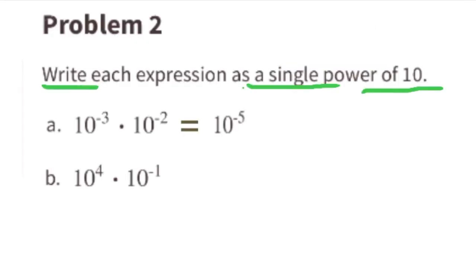Part B: 10 to the power of 4 times 10 to the power of negative 1. Add their exponents: 4 plus negative 1, or 4 minus 1, equals 3. So 10 to the power of 4 times 10 to the power of negative 1 equals 10 to the power of 3.